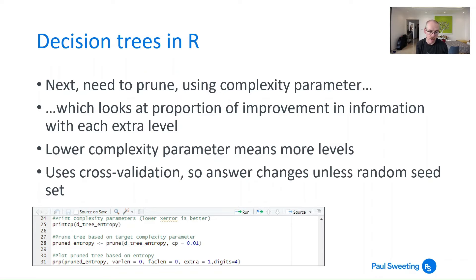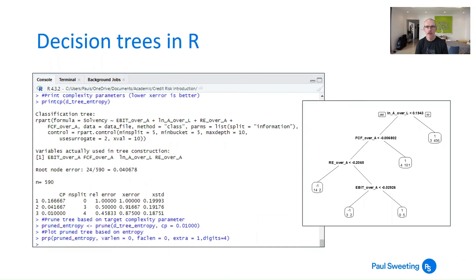So here is the code that we use. The first thing we want to do is we want to print the complexity parameters and look at the cross-validation error that we get. A lower level of error is better. We want to prune the tree based on that target complexity parameter. That's just using the function prune and setting the complexity parameter that we want to have. And then we can simply just plot the pruned tree. So if we run this code what we find is that when we print the complexity parameters the one which gives us the lowest cross-validation error is 0.01. So we put that into our calculations and calculate a pruned tree based on that complexity parameter. Then print that tree and we find it's exactly like the tree that we had before.